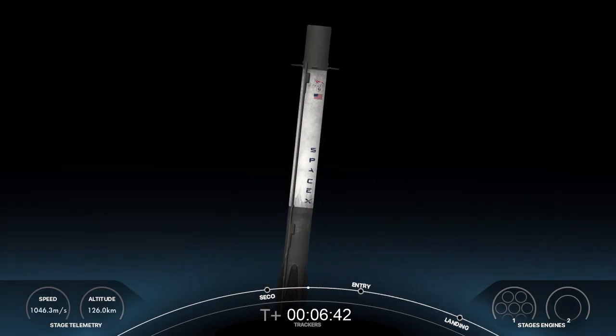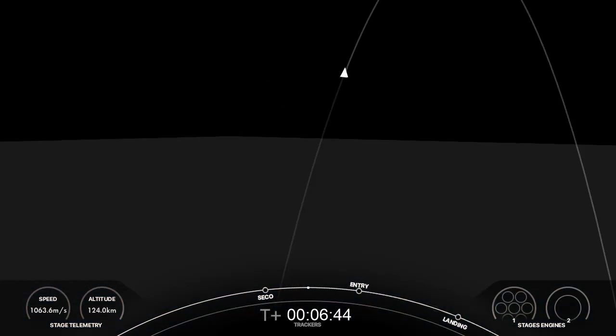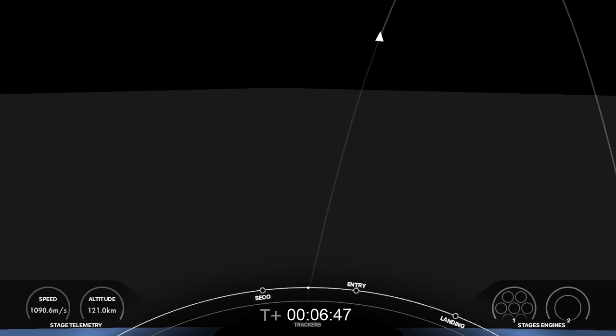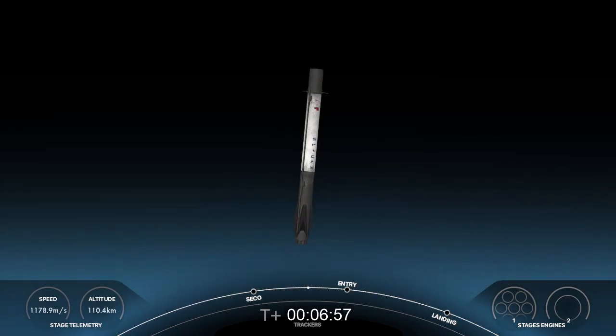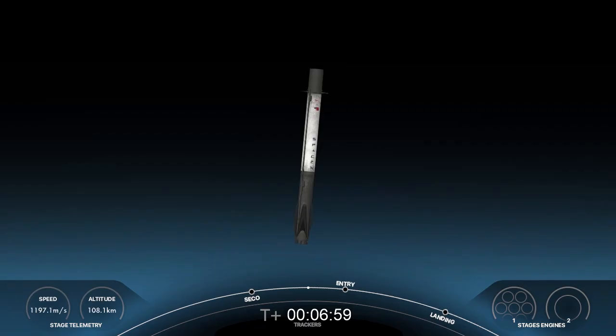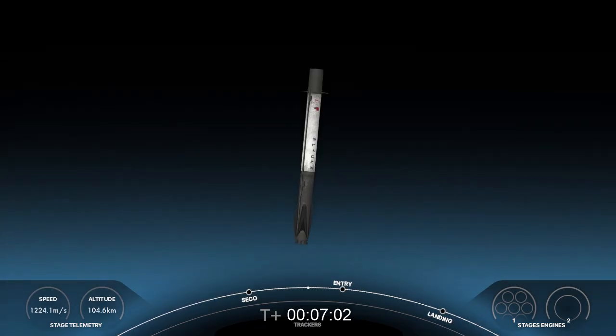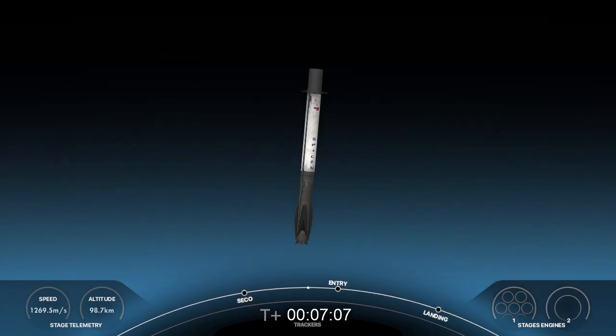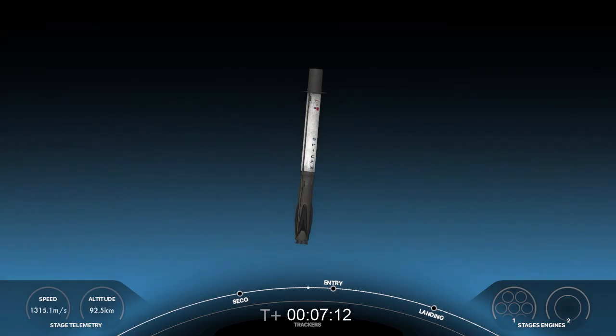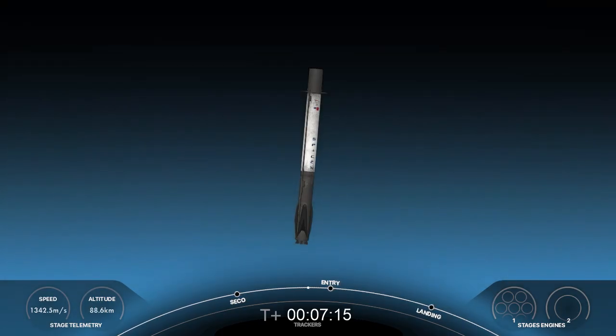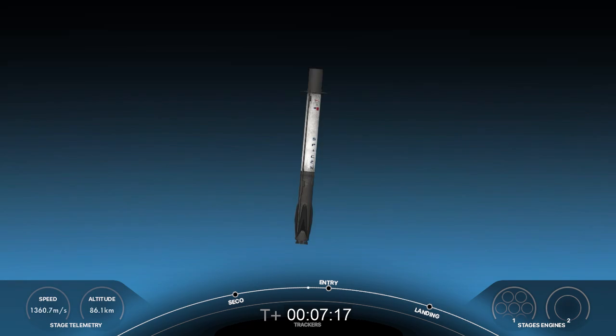Now as a reminder, the nine Merlin engines on Falcon's first stage are optimized for sea level and they can achieve around 190,000 pounds of thrust during ascent and descent. Compare that to the single MVAC engine you see on your screen, this achieves around 220,500 pounds of thrust in a vacuum state. During entry burn, Falcon 9 will decelerate by firing its Merlin engines, but the vehicle is still moving really fast. As Zach mentioned, this causes the vehicle to fly through Merlin's exhaust gases and this deposits the layer of soot on the vehicle's surface, giving Falcon 9 that flight-proven look.